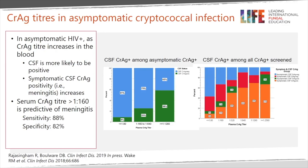Among asymptomatic CrAg-positive persons, CrAg titers of 1 to 160 or greater are associated with increased mortality despite receiving standard of care antifungal therapy. From the same cohort, as serum CrAg titer increases, the probability of CSF involvement increases. In asymptomatic persons with high CrAg titers, those people are more likely to have subclinical cryptococcal meningitis. As CrAg titer increases, those with symptomatic CrAg-positive CSF — i.e. meningitis — increases. Serum CrAg titer of 1 to 160 or greater is predictive of meningitis with a sensitivity of 88 percent and specificity of 82 percent.